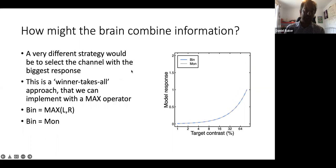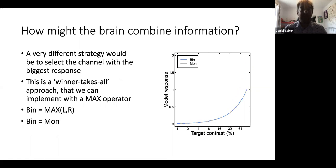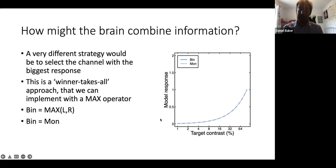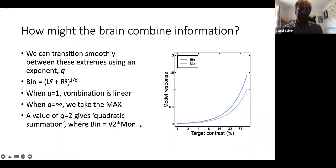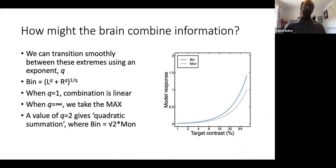At the opposite extreme, we could choose the channel with the biggest response — a winner-takes-all approach — implemented with a max operator. If we have our two monocular inputs L and R, we take the maximum response. That has the effect that the binocular response, when we stimulate both eyes at the same time, will always be the same as the monocular response to a single stimulus. You can see in the graph that the blue and grey curves sit right on top of each other. These are two very extreme positions, and what might be more useful is to be able to transition smoothly between them.